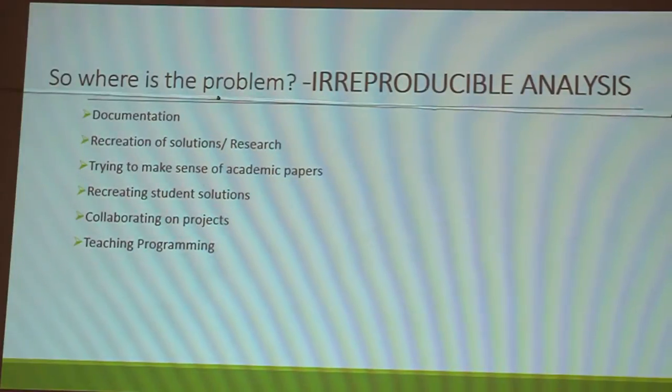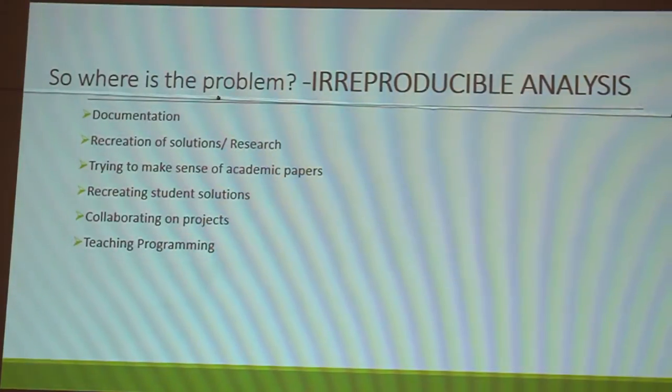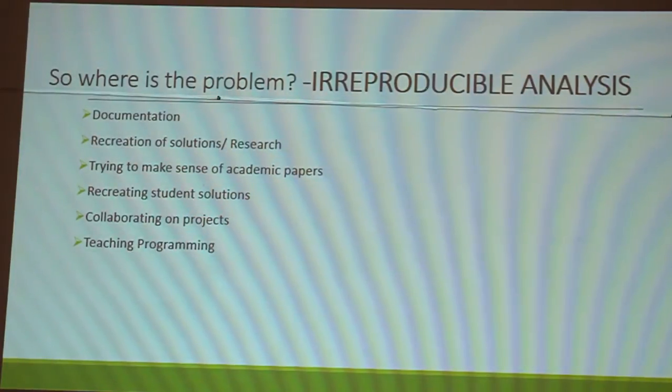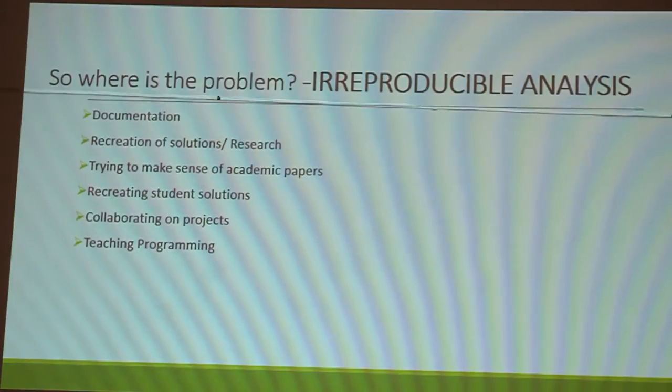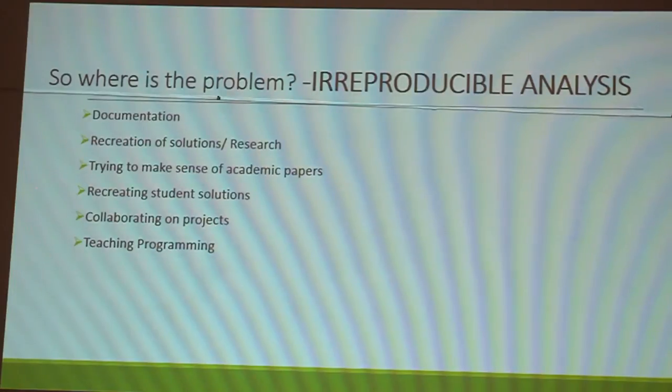Usually what happens is you have an idea, initially you prototype, you go through iterations, and then finally you have a solid output. So the steps that happen from the iteration of the beginning of the idea until the final product, they are very hard to document. Another thing is recreation of solutions. This can be a programming assignment, this can be a data analysis assignment, or this can be research. Again, trying to make sense of academic papers. Collaborating on projects. You might be working together on projects and you want to work together. There are a lot of tools which can help you to do that. Things like Slack, things like Google Docs. But we try to find something that can fit within the scientific sense or the programming sense.